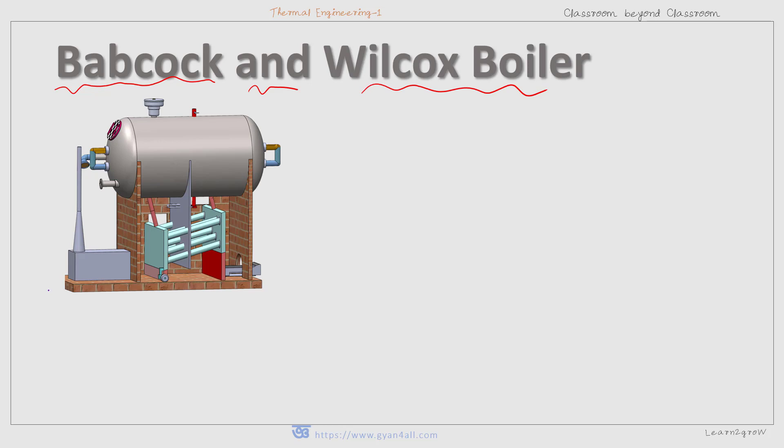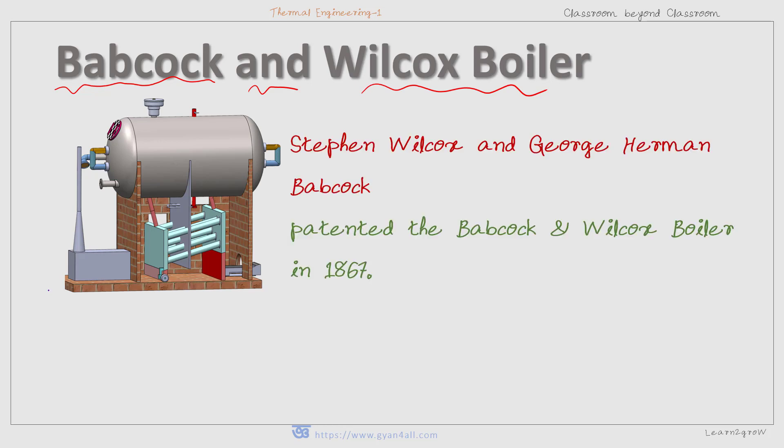In 1867, Stephen Wilcox and George Herman Babcock patented the Babcock and Wilcox Boiler, which used water tubes to generate steam more safely than fire tube boilers. The boiler generated high pressure steam more safely and it was more efficient.